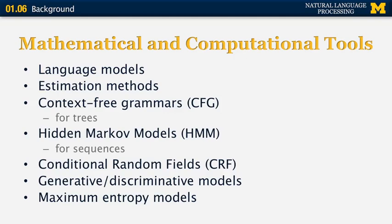Some additional mathematical and computational tools that are popular in natural language processing include language models, which are used to determine the probability of a certain sequence of symbols or words, estimation methods, context-free grammars for trees, hidden Markov models or conditional random fields for sequences, and then also different statistical models such as different generative and discriminative models and maximum entropy models.